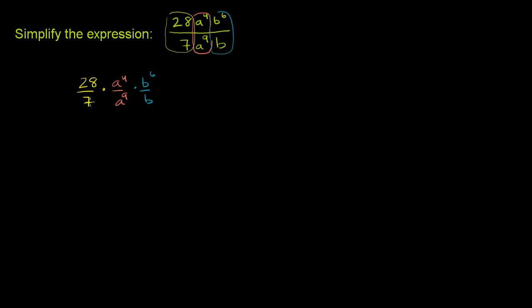This 28 over 7, that's easy. 28 divided by 7 is 4.